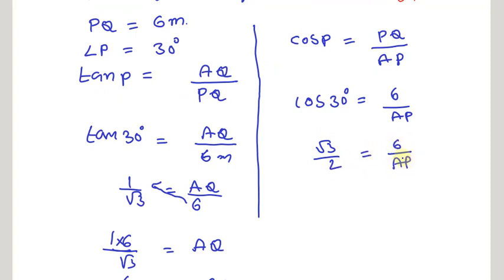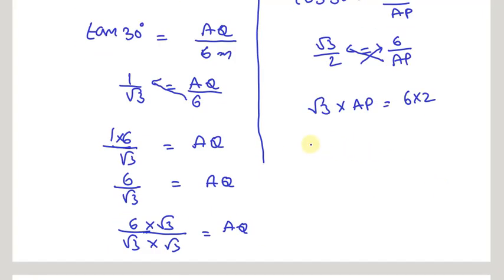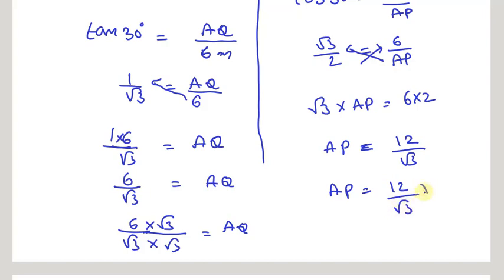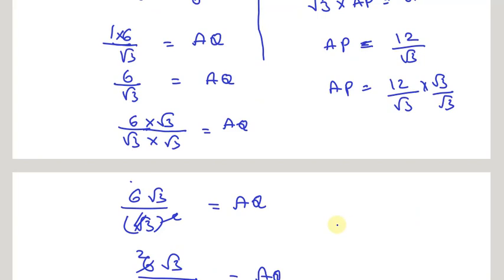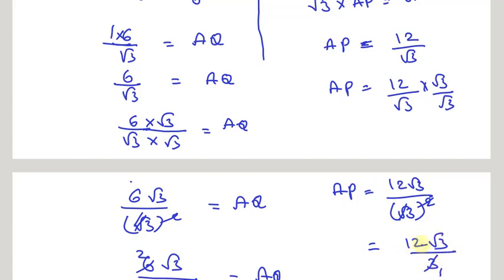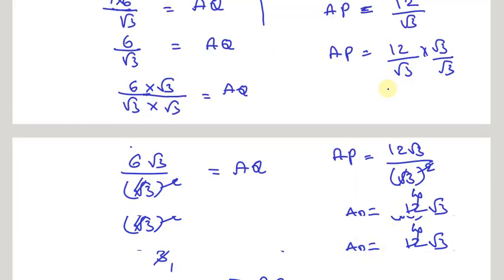Cos 30 = √3/2, so √3/2 = 6/AP. Cross-multiplying: √3 × AP = 12, so AP = 12/√3. Rationalizing by multiplying by √3/√3 gives AP = 12√3 / 3 = 4√3. So AP = 4√3.